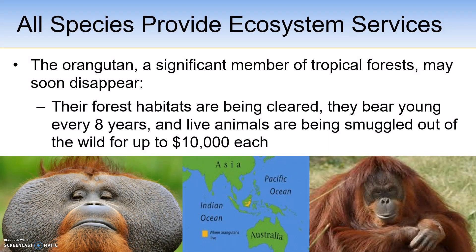Orangutans are the largest tree-living mammal in the world. They have remarkable abilities for traveling through the forest canopy — they make their homes in the trees, find their food there, and build their tree nests each night out of leaves and branches, sometimes as much as 120 feet above the ground. Orangutans usually have little need to come down from the trees as they are uniquely and very well adapted for their arboreal lifestyle.